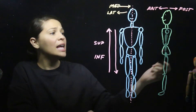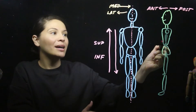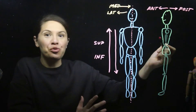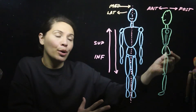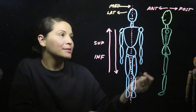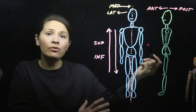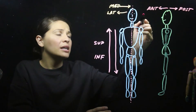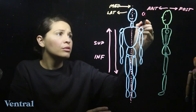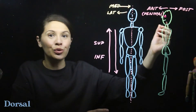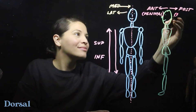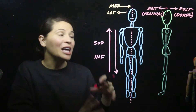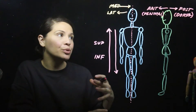The umbilicus — your belly button — is anterior to your spine, and your spine is posterior to your umbilicus. Other terms for anterior and posterior are actually ventral and dorsal. These can be used interchangeably, and you will come across them in your anatomy textbooks.